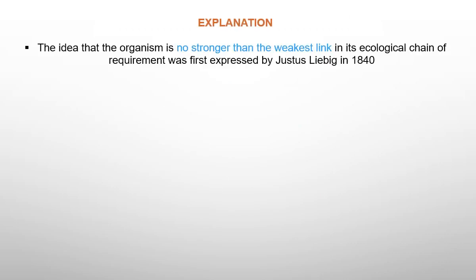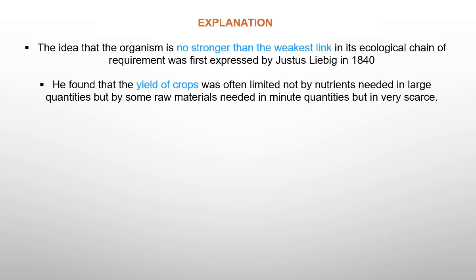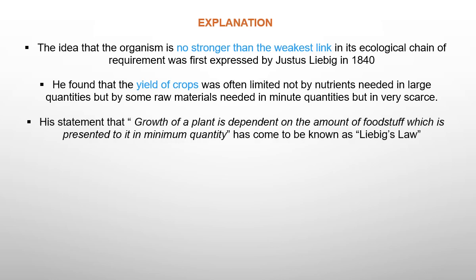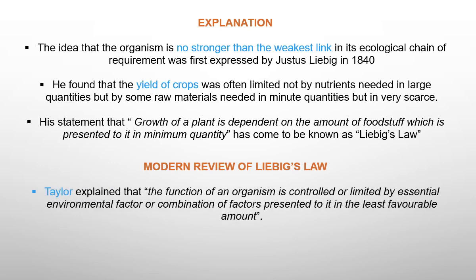The idea that an organism is no stronger than the weakest link in its ecological chain of requirements was first expressed by Liebig in 1840. He found that the yield of a crop was often limited not by nutrients needed in large quantities, but by raw materials needed only in minute quantities. His statement that the growth of a plant is dependent on the amount of foodstuff presented to it in minimum quantity has come to be known as Liebig's Law.